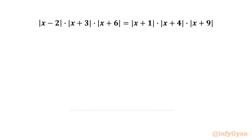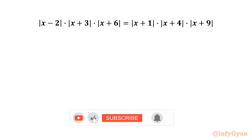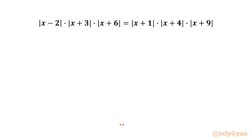Welcome to Infigyan, my dear friends. Today in this video we have one very interesting question from Math Olympiads. We are going to solve one absolute value equation. We have mod of (x minus 2) times mod of (x plus 3) times mod of (x plus 6) equal to mod of (x plus 1) times mod of (x plus 4) times mod of (x plus 9).